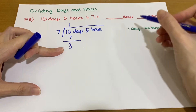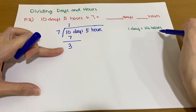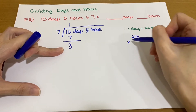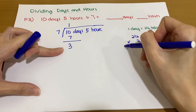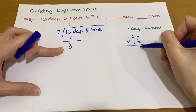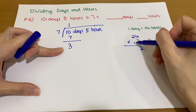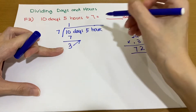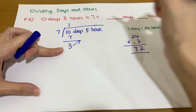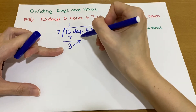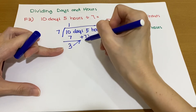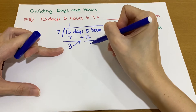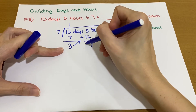We know that one day is 24 hours, so for 3 days: 24 times 3 equals 72. So these 3 days convert to 72 hours. We add 72 to the 5 hours: 5 plus 72 gives us 77 hours.